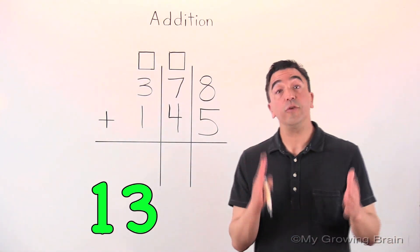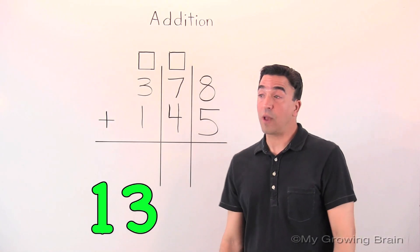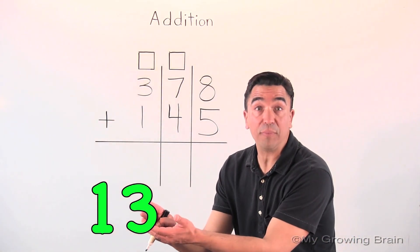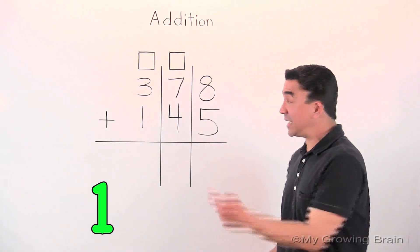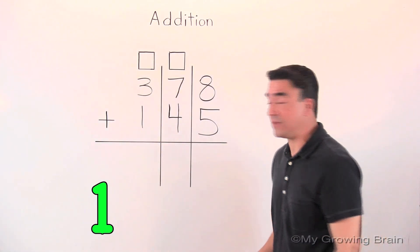Thirteen is a two-digit number. So I'm going to take the three from the ones place and put it in our ones place.